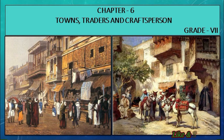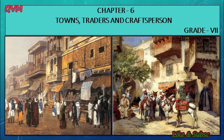All these towns represented the process of urbanization during the medieval period. After the 8th century, many small towns emerged out of large villages across the whole subcontinent, and the zamindari system developed during this period. Extensive trade was also carried out with the ports of the Red Sea, Persian Gulf, East Africa, Southeast Asia, and China.